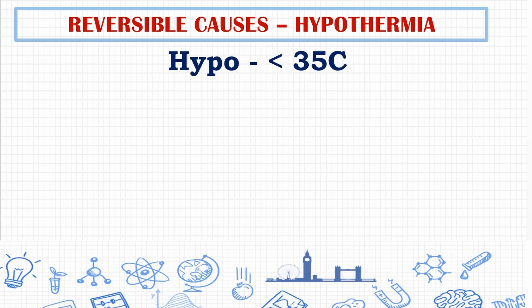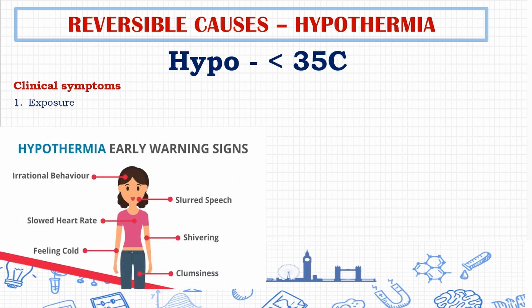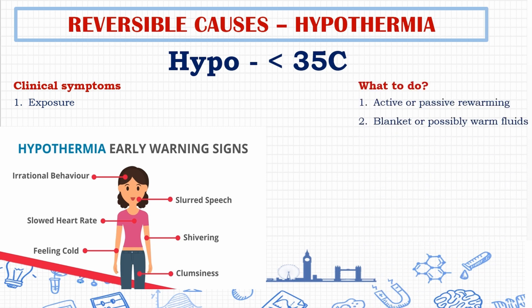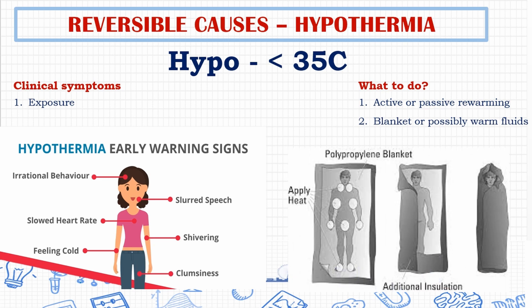Next is hypothermia, where temperature is less than 35 degrees Celsius. If temperature drops below 30 degrees Celsius, there will be decreased cardiac output. Hypothermia is usually caused by environmental exposure. Early signs include irrational behavior, decreased heart rate, slurred speech, increased shivering, feeling cold, and clumsiness. Treatment options include active and passive rewarming, providing blankets or warm fluids.